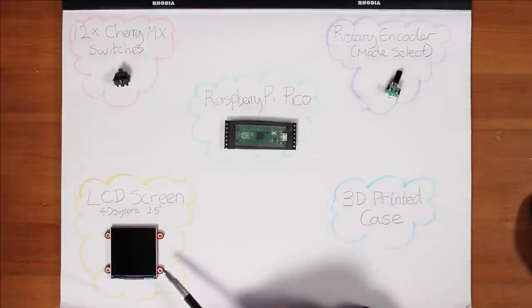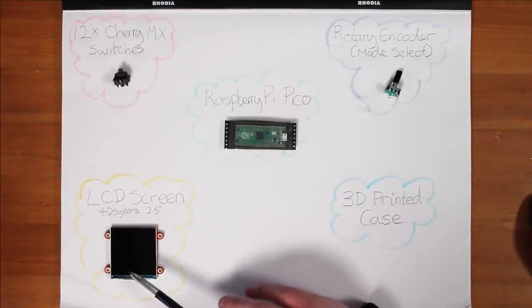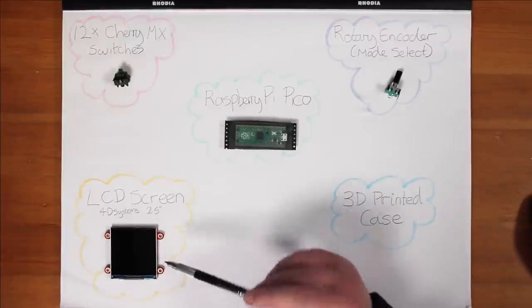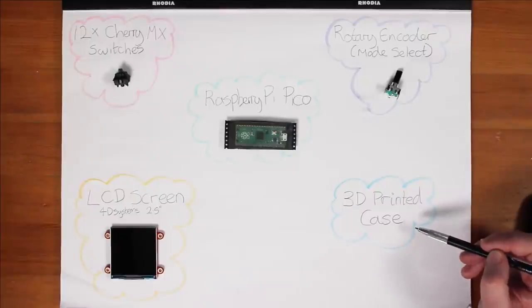So I can use the rotary encoder to flick between the programs that I want. An LCD screen. This is because I'm going to display what each of the buttons does on the screen above the keypad. And I'm going to put it all in a 3D printed case.